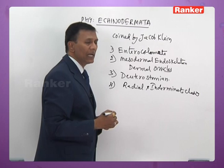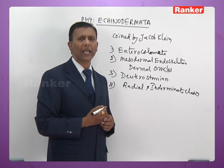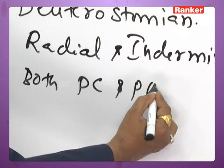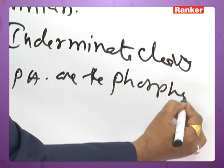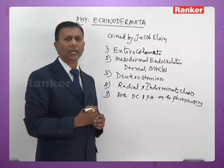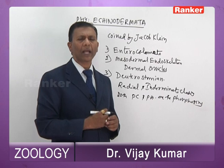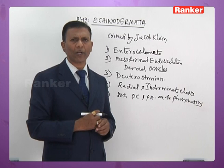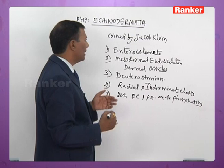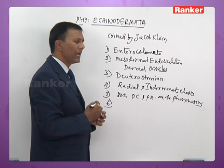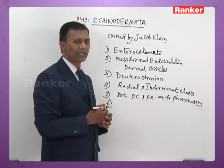Fourth, cleavage is radial and indeterminate, like vertebrates. Fifth, echinoderms have both phosphocreatine and phosphoarginine as phosphogens. In all other invertebrates, phosphoarginine is present, whereas in vertebrates, phosphocreatine is present. In Echinodermata and Hemichordata, both phosphocreatine and phosphoarginine are present, acting as phosphogens to provide ATP during muscle contraction. These are all the chordate characteristic features of echinoderms: enterocoelmate, mesodermal endoskeleton in the form of dermal ossicles, deuterostomian nature, radial and indeterminate cleavage, and presence of both PC and PA as phosphogens.